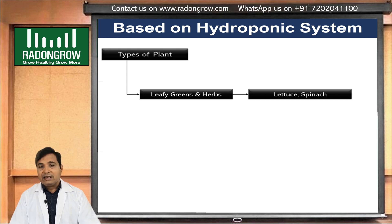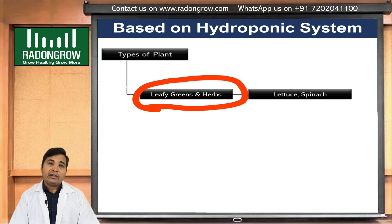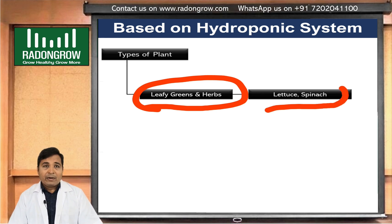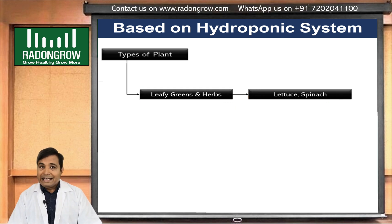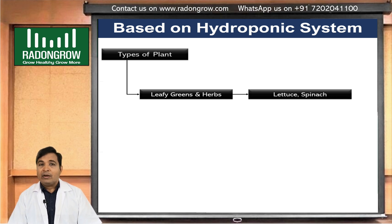If you want to grow leafy greens — leafy greens are generally small plants like lettuce, spinach, and coriander. Simply put, we are eating the complete plant or just the leaf. For leafy greens, which are small plants, we can use a vertical system.